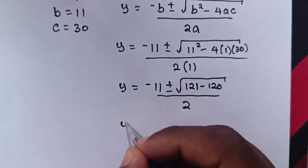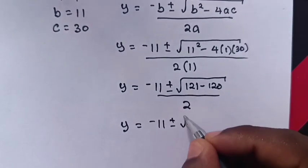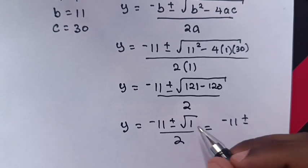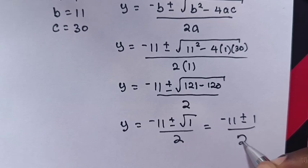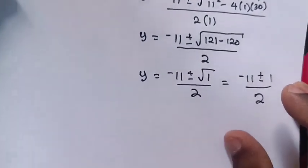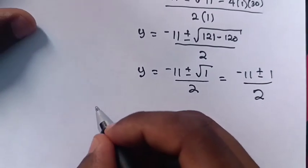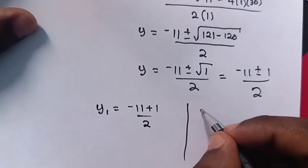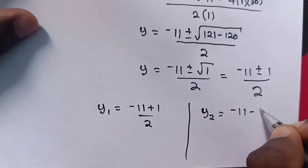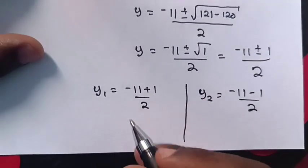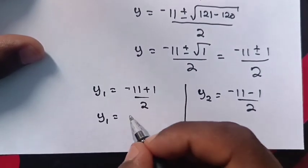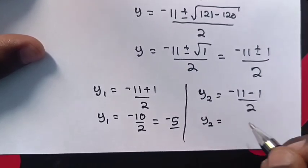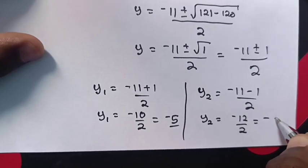So y will be equal to negative 11 plus or minus square root of 1, which is 1, over 2. Therefore, y₁ is equal to negative 11 plus 1 over 2, which equals negative 5. And y₂ is equal to negative 11 minus 1 over 2, which is negative 12 over 2, equal to negative 6.